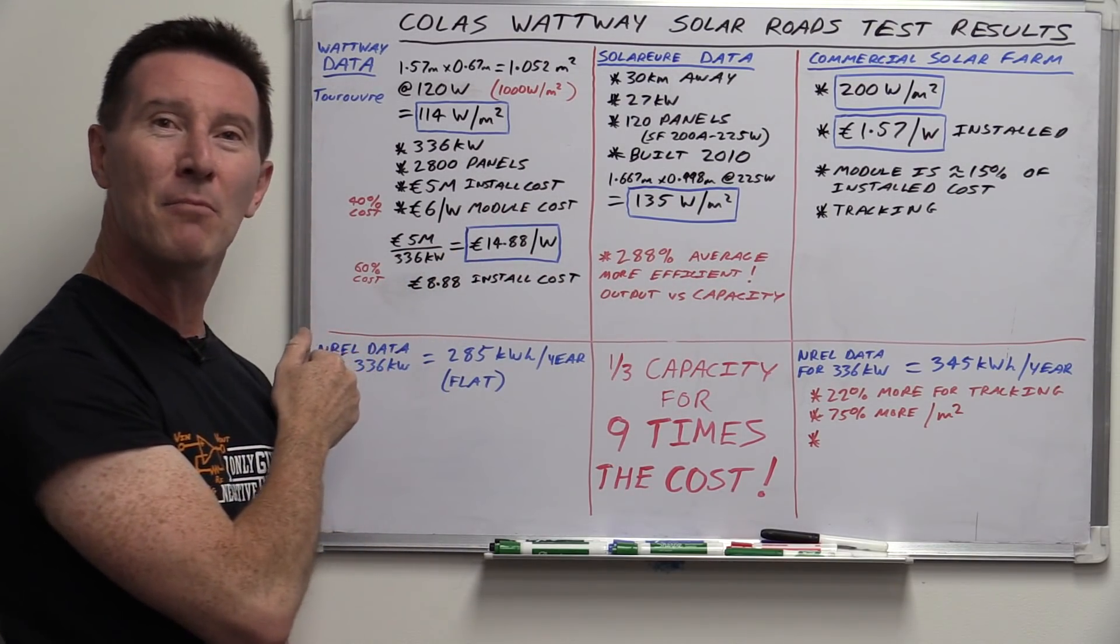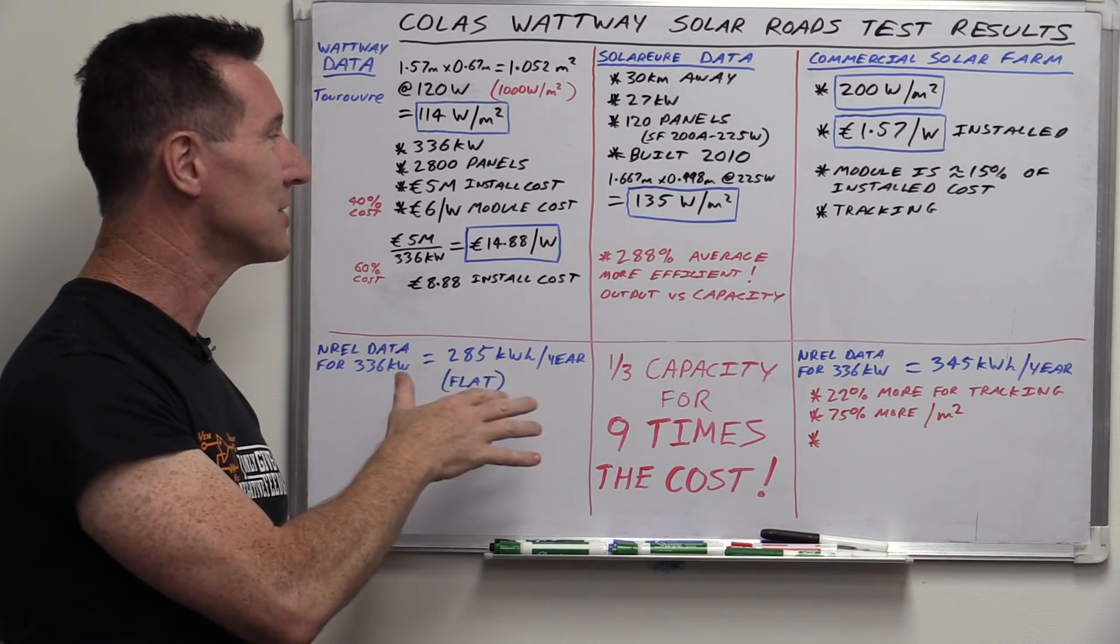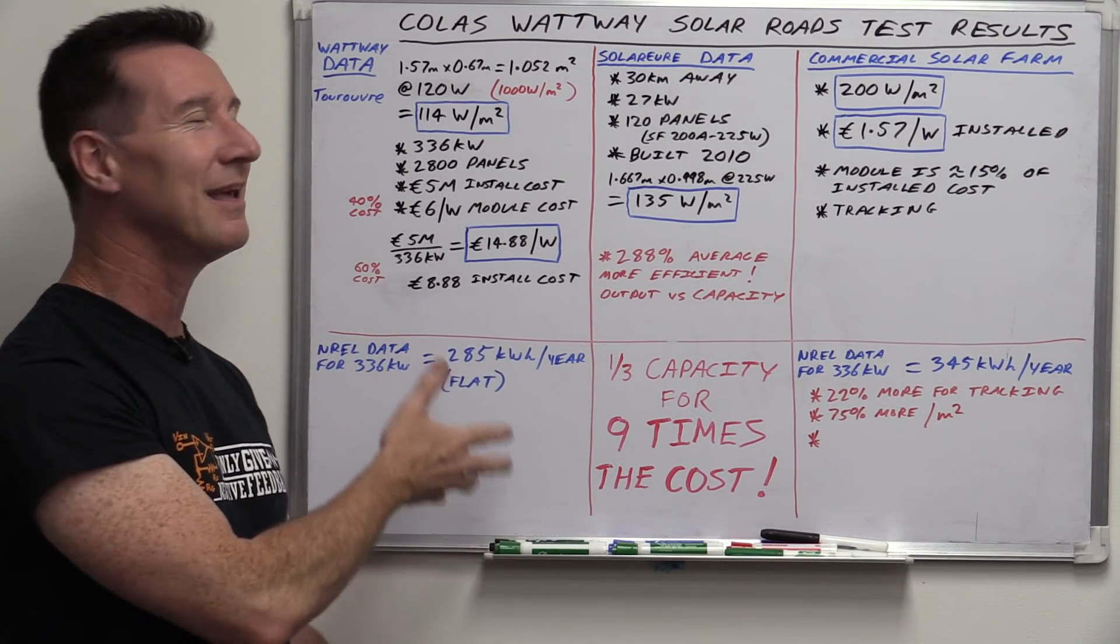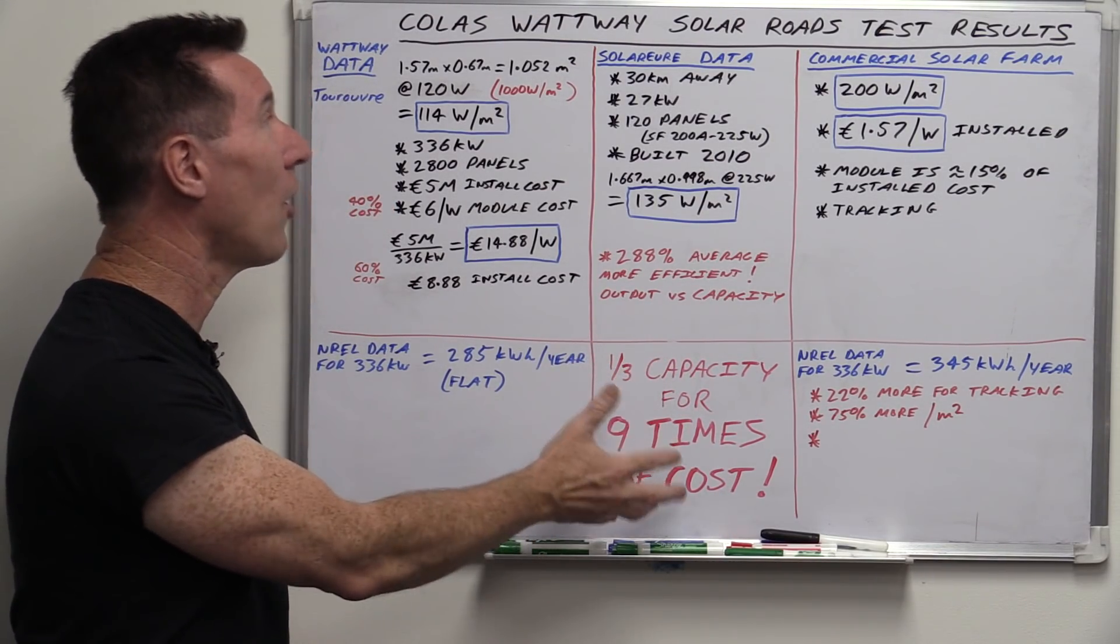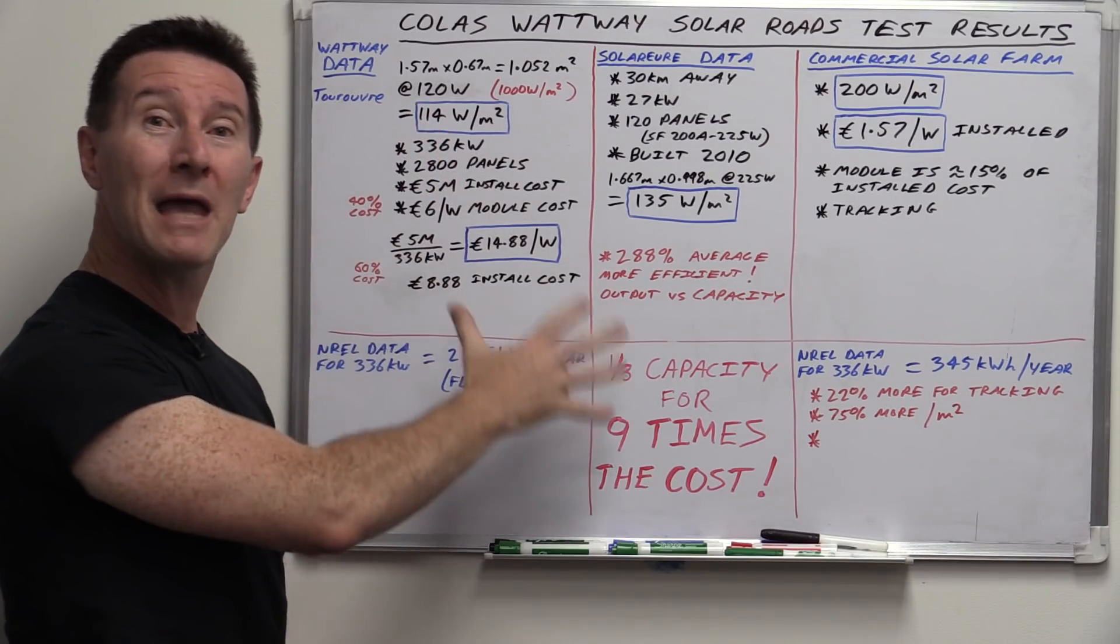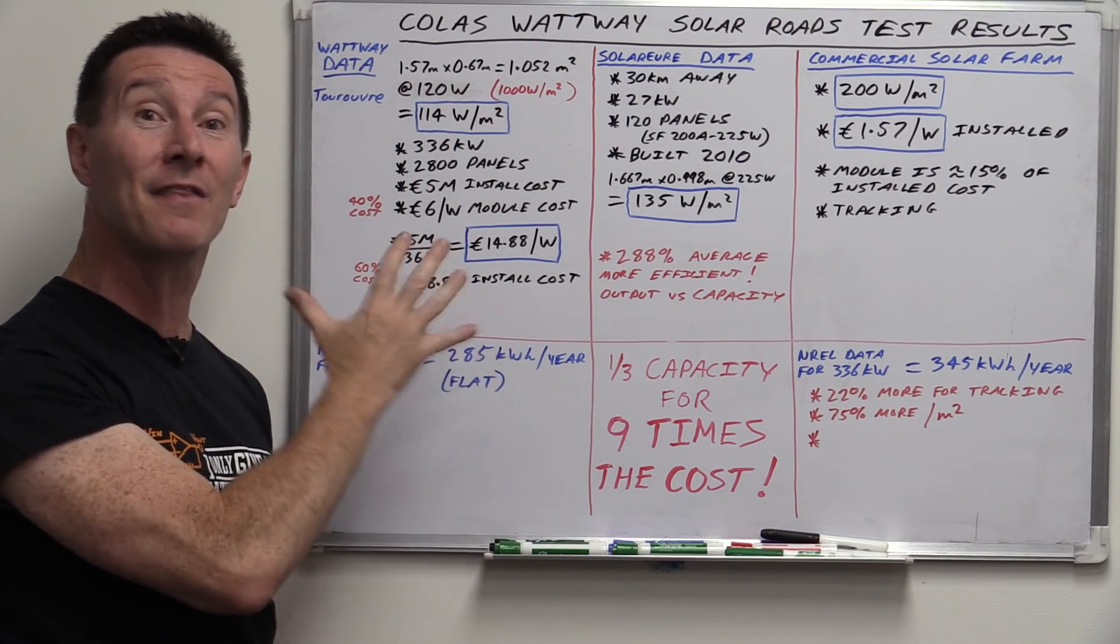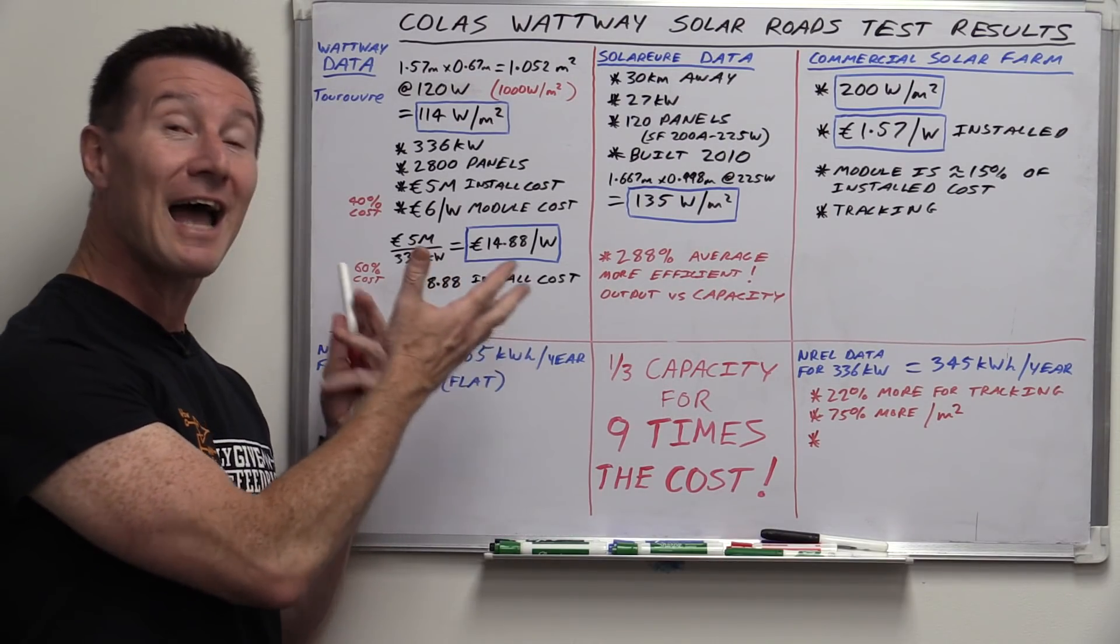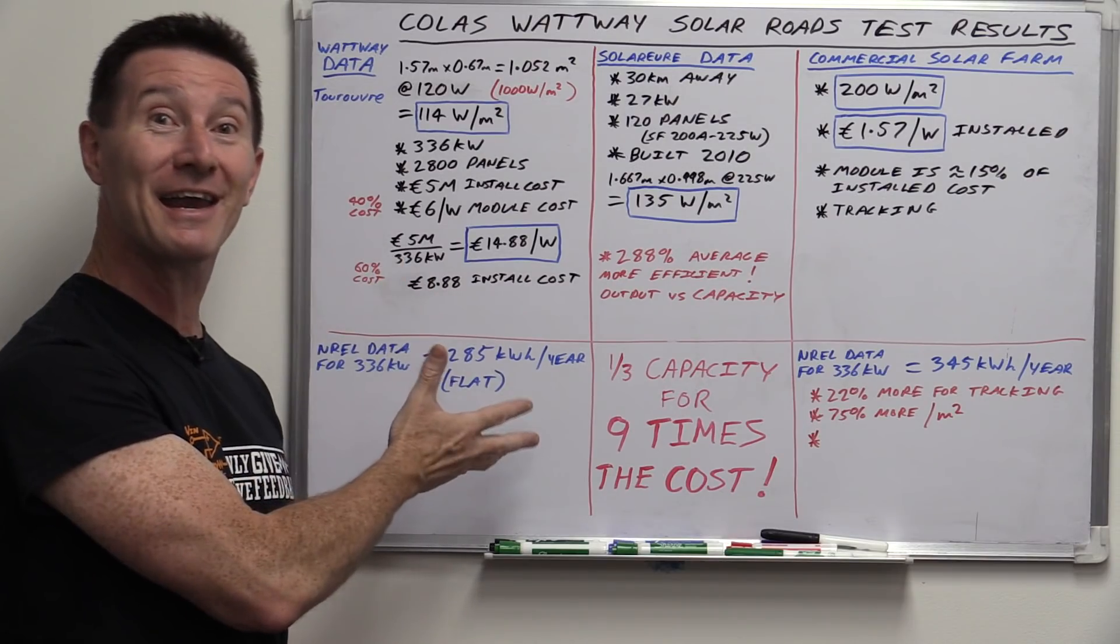And as I said, the installation cost might come down. I think in the previous video, I might have said it might come down to six times the cost or something like that, but why? A third the capacity for nine times the cost based on real measured data. There is no way to spin this thing that this is a good idea. You just can't argue with demonstrably true measured data. It's just ridiculous.